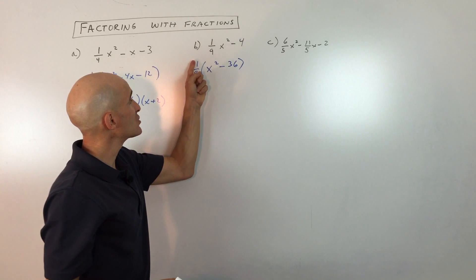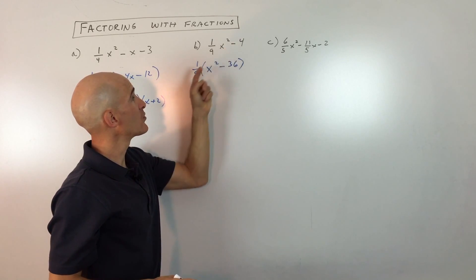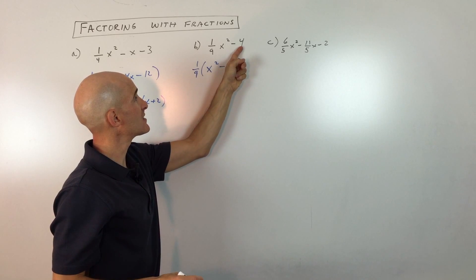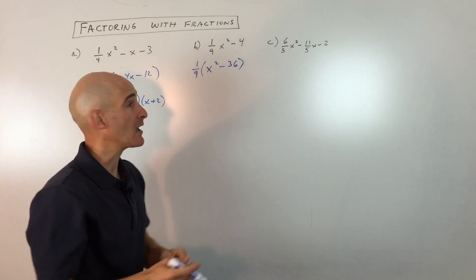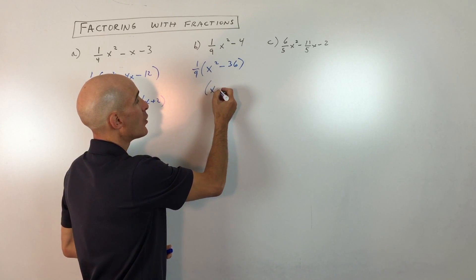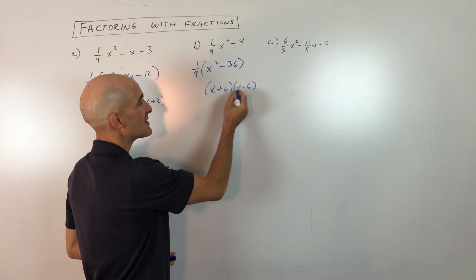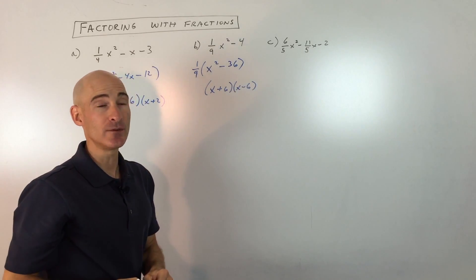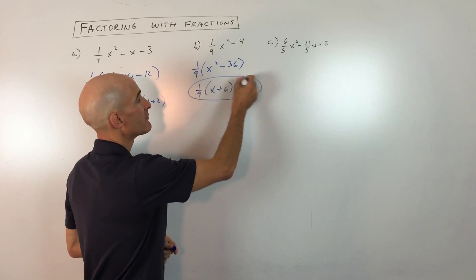Now, at this point, if you're not convinced, just distribute the one-ninth into the parentheses here, and you should get back the original. One-ninth times 36 is four. One-ninth times x squared gives us back the one-ninth x squared. Now you can see we've got a difference of two squares. So we can factor that as x plus six, x minus six, because the inside and outside terms are going to cancel those products. And you bring down the one-ninth, so this is going to be our final answer.